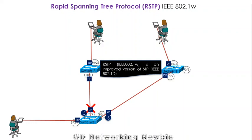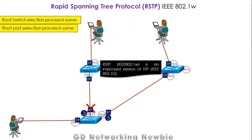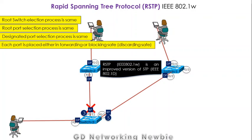RSTP is actually an improved version of STP, and most of the main things are the same — for example, the root selection process is the same, root port selection process is also the same, designated port selection process is the same, and in addition each port is placed either in forwarding or blocking state, which also happens in STP.